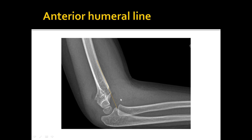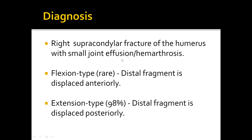This diagram shows the anterior humeral line. The anterior humeral line should intersect the middle third of the capitulum; it is drawn from the anterior cortex of the distal humerus. When it does not intersect the capitulum, this indicates a supracondylar fracture, particularly of the extension type.